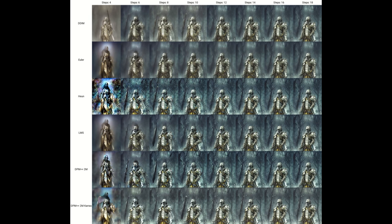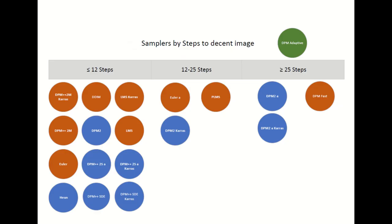Finally, I tested to see how many steps on average it took for samplers to get to a decent output. This is mostly a qualitative judgment, so don't draw too much meaning into it. For group 1 in particular, all the samplers except one were very close in the number of steps required to get a decent image. In the other notable finding, we found out that DPM Fast isn't.